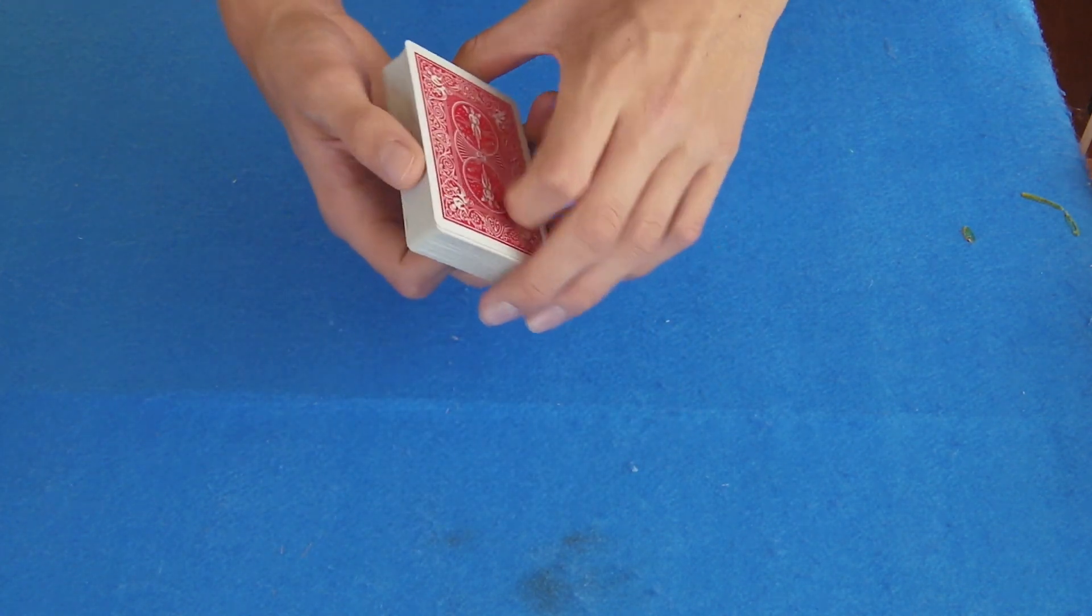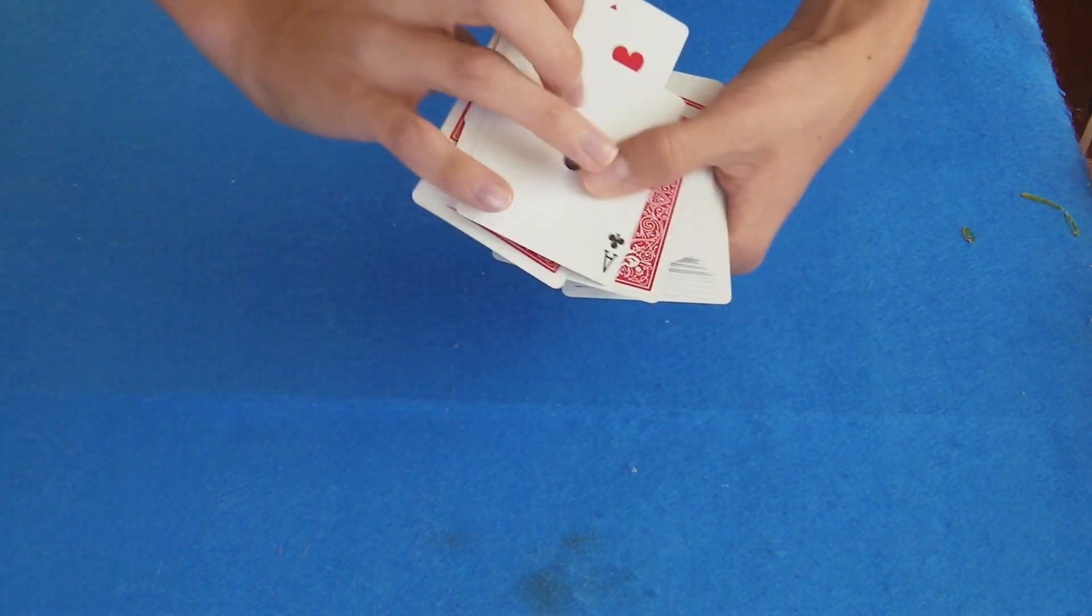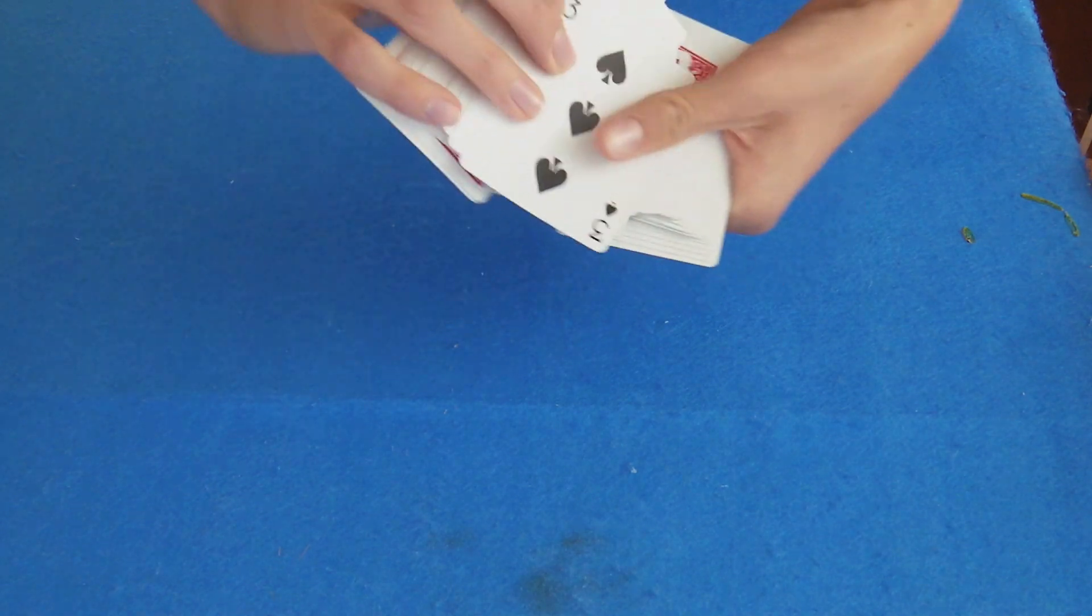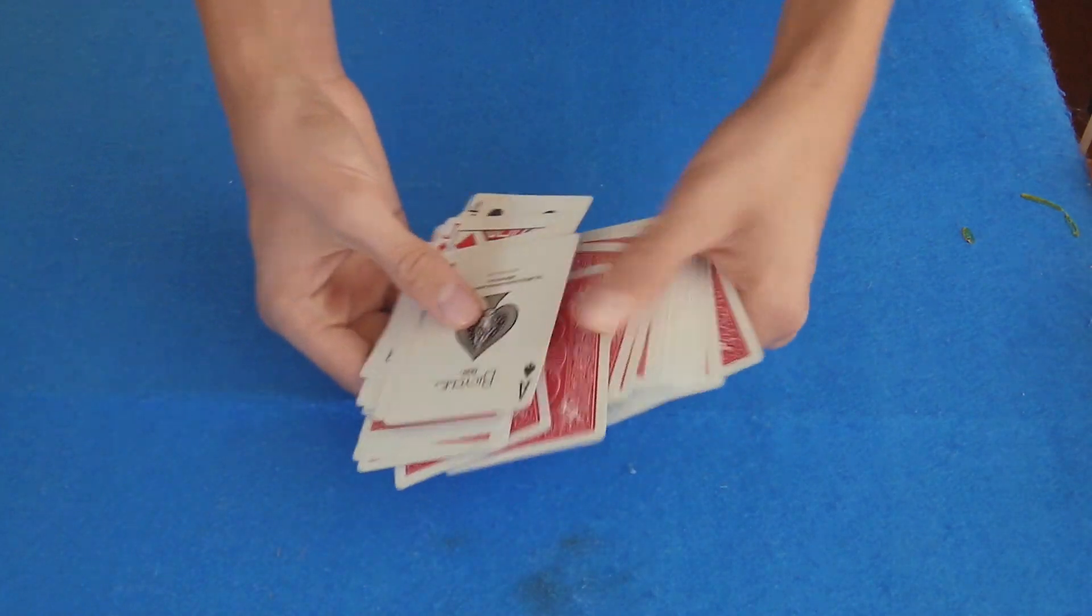And now, what we're going to do is I'm going to take cards and flip them over, keep some face up, face down. Cards face up, face down, face up, face down. We're getting the cards all mixed up—some are flipped up, some are down.